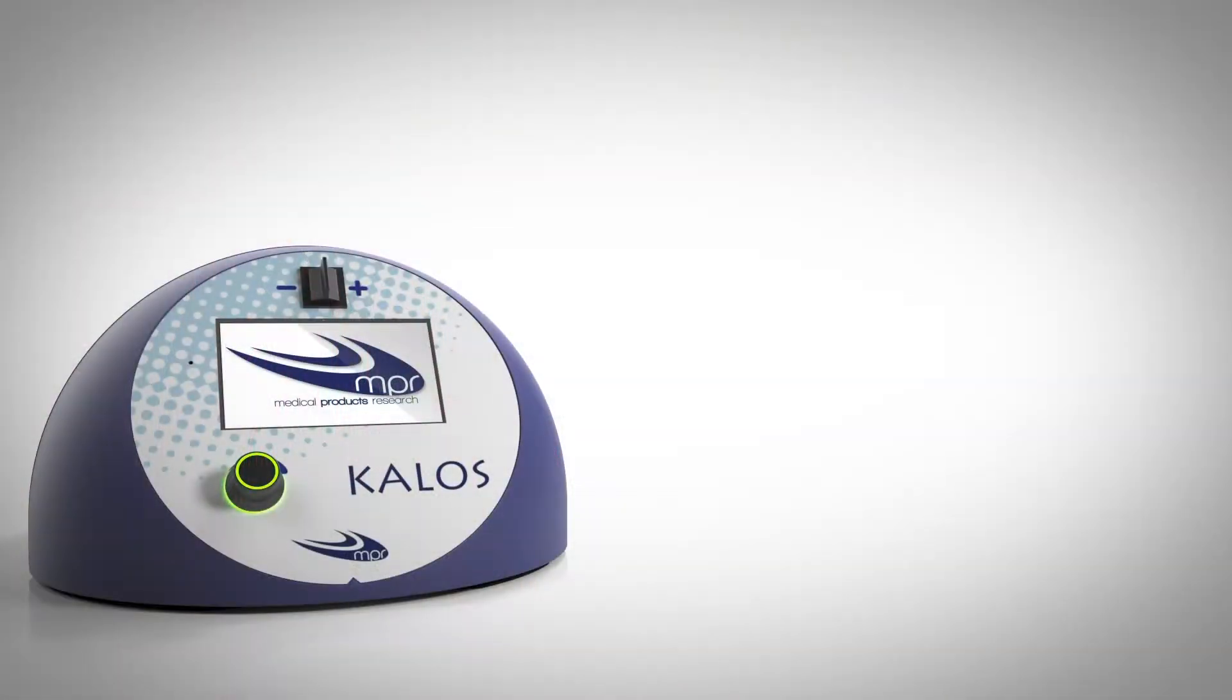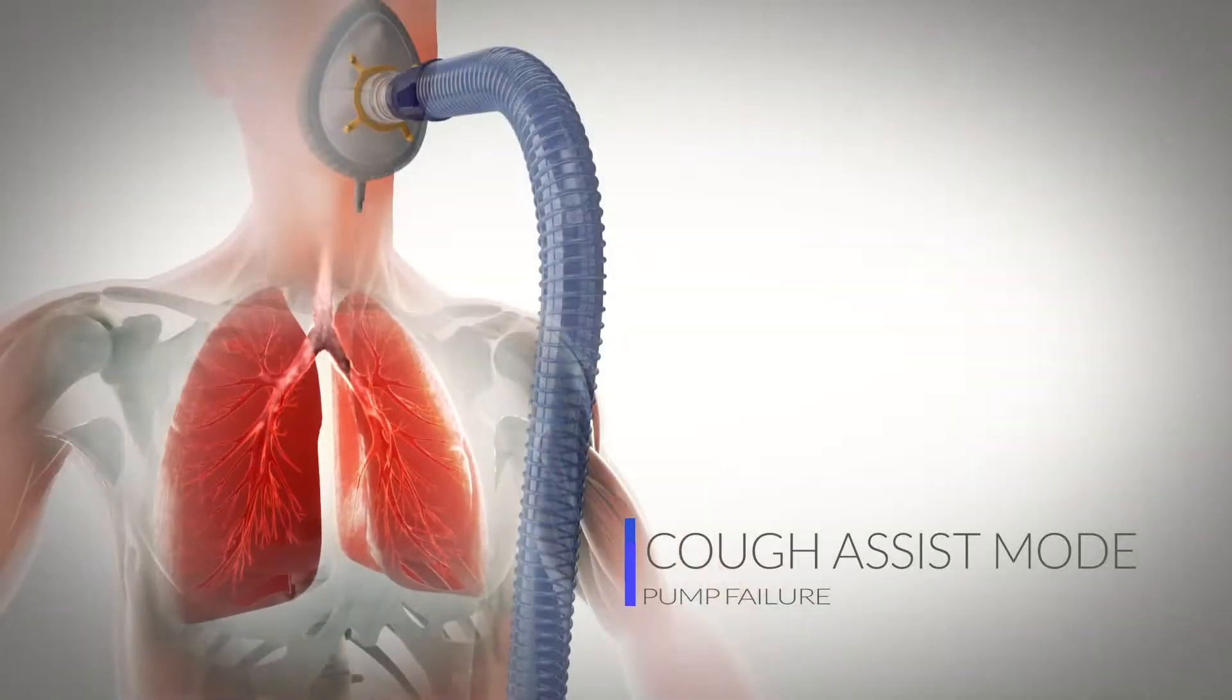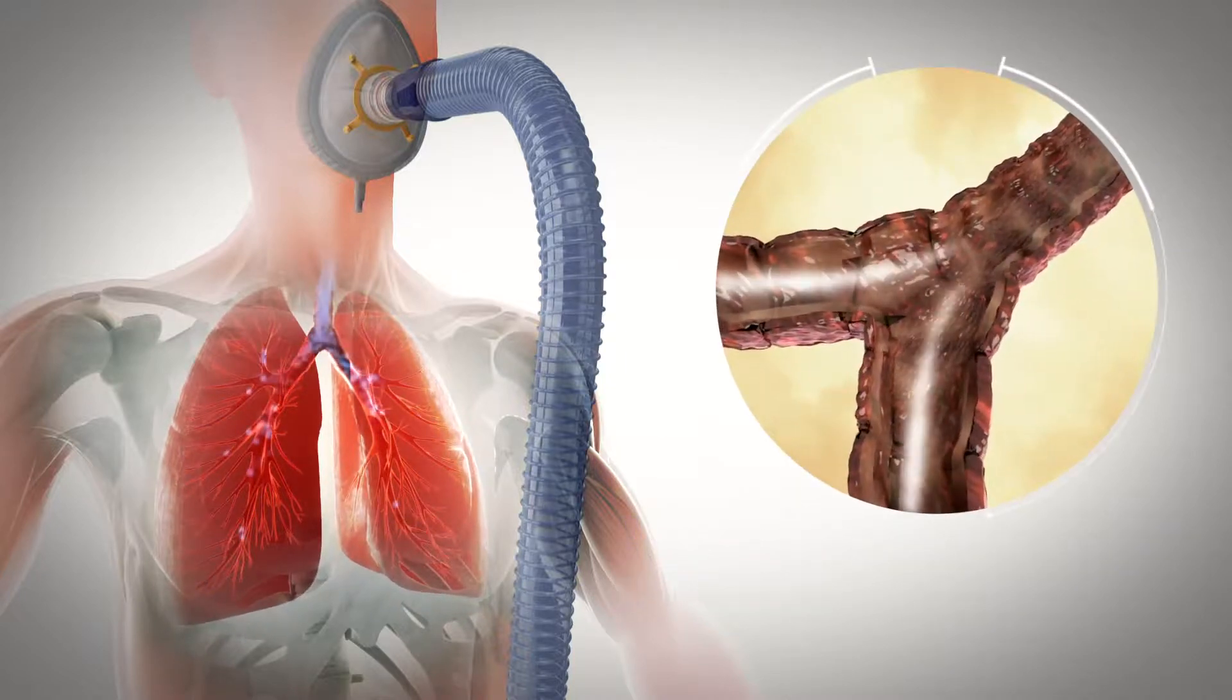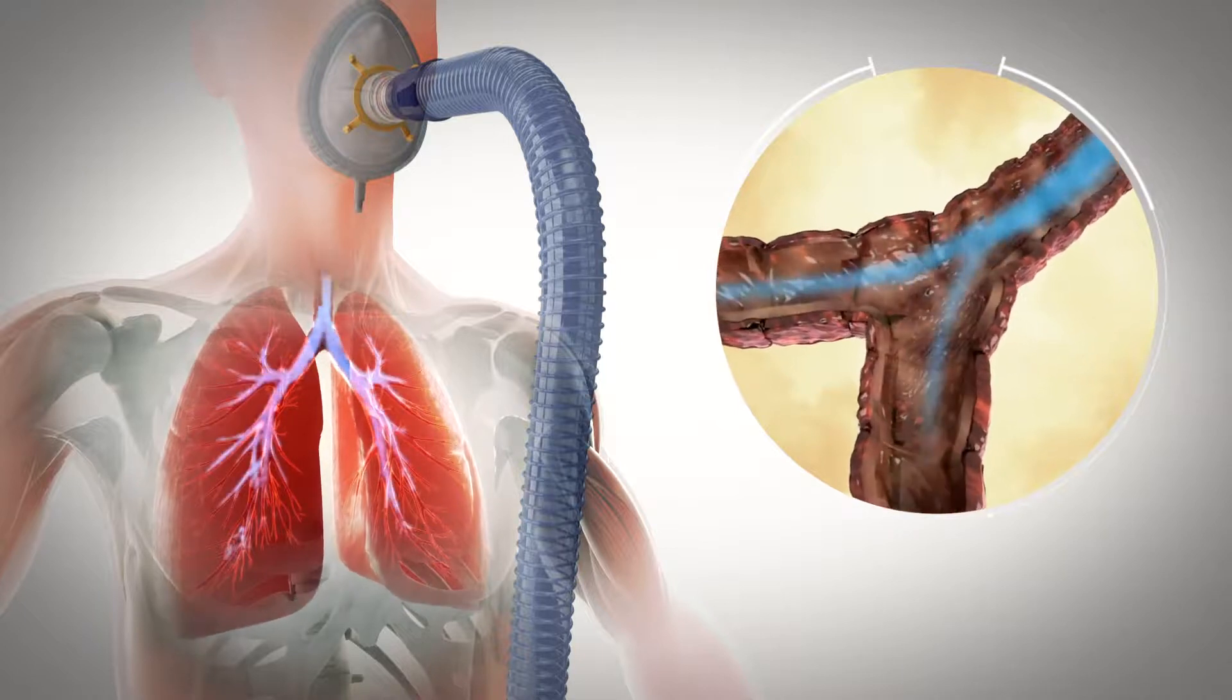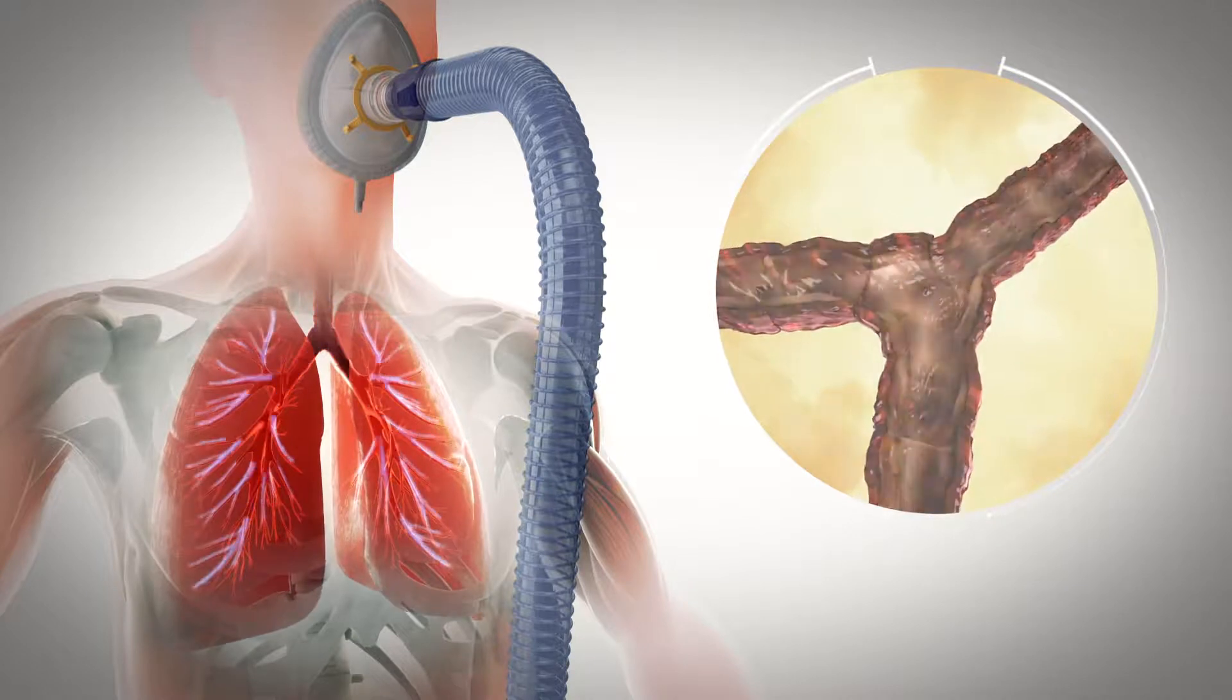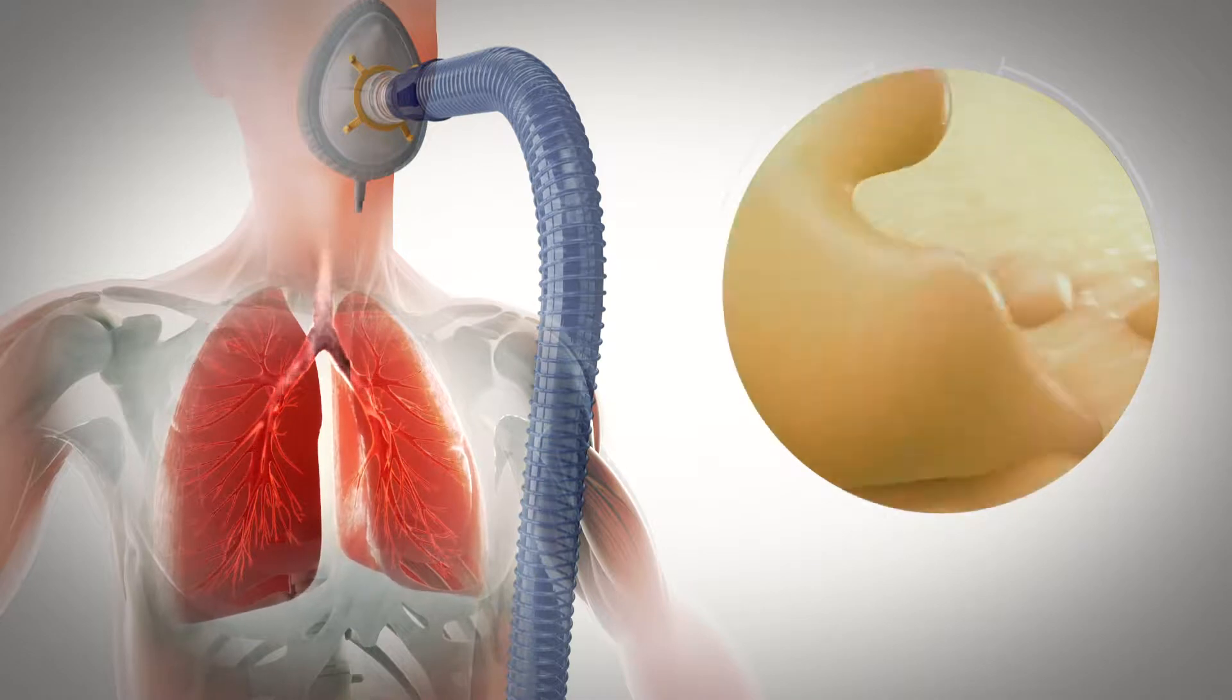Kalos integrates different technologies that support the physiological mechanisms of airway clearance when these are compromised. The cough assist function acts as a substitute in the case of ineffective cough, to clear the central airways from occlusions through the application of alternating positive and negative pressure during inhalation and exhalation respectively. The goal is to maximize the peak cough flow in order to promote the expulsion of secretions.